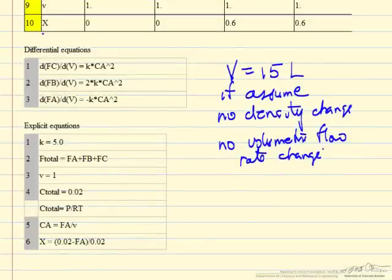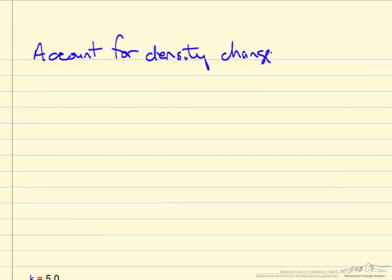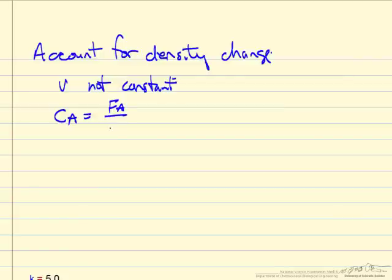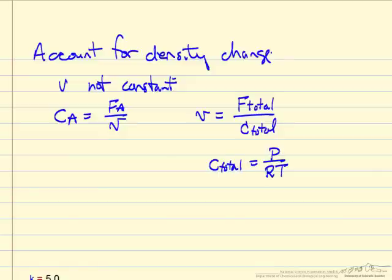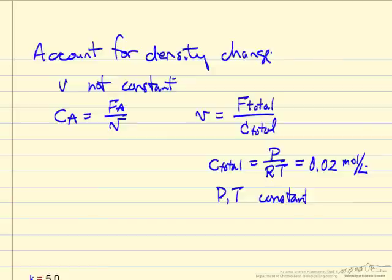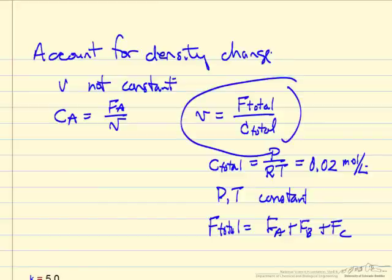Now we do the comparison where we take into account the volumetric flow rate change due to density. If we account for the density change, the volumetric flow rate, v, is not constant. The concentration of A is the molar flow rate of A over the volumetric flow rate, and the volumetric flow rate equals the total molar flow rate — which is what's changing — divided by the total concentration. Since we have an ideal gas at constant P and T, the total concentration equals the inlet concentration. The total molar flow rate is the flow rate of A plus B plus C.